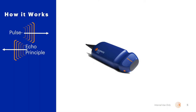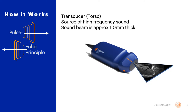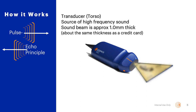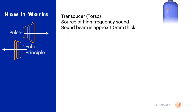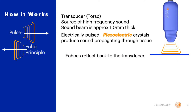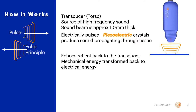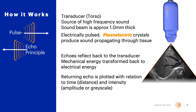Ultrasound works on something called the pulse echo principle. The transducer is the source of the high frequency sound, and while we might think it emits a large block of acoustic energy, the reality is the sound beam is approximately 1 millimeter in thickness, or about the same thickness as a credit card. The transducer is electrically pulsed, the piezoelectric crystals produce sound which propagates through the tissue. Those echoes reflect back to the transducer, the mechanical energy is transformed back into electrical, and the returning echo is then plotted on the screen with relationship to time and intensity.